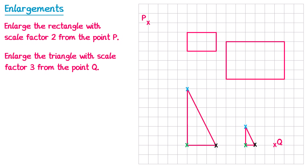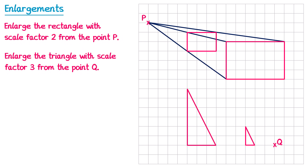Joining up these points gives the enlarged triangle in the correct place. There's a useful way to check if you've drawn your shape correctly: draw a straight line from the centre of enlargement through a point on the original shape and continue it — it should hit the same corresponding point on the enlarged shape. This applies to all points on the shape. If any of these are misaligned it might indicate you've done the enlargement wrong. We can check this on the triangle as well, and you can see these ones have been enlarged correctly.